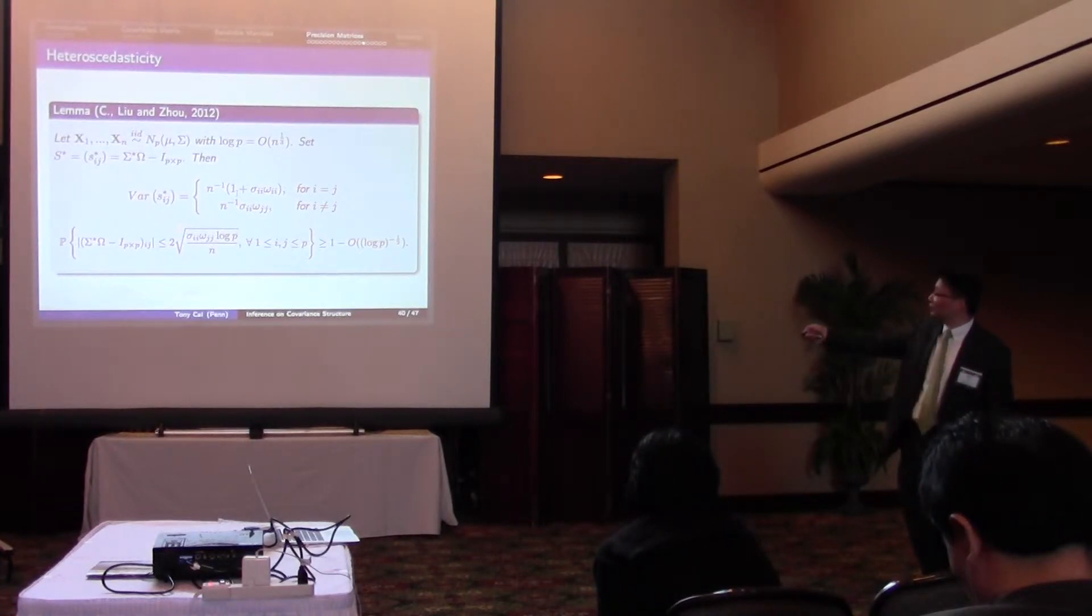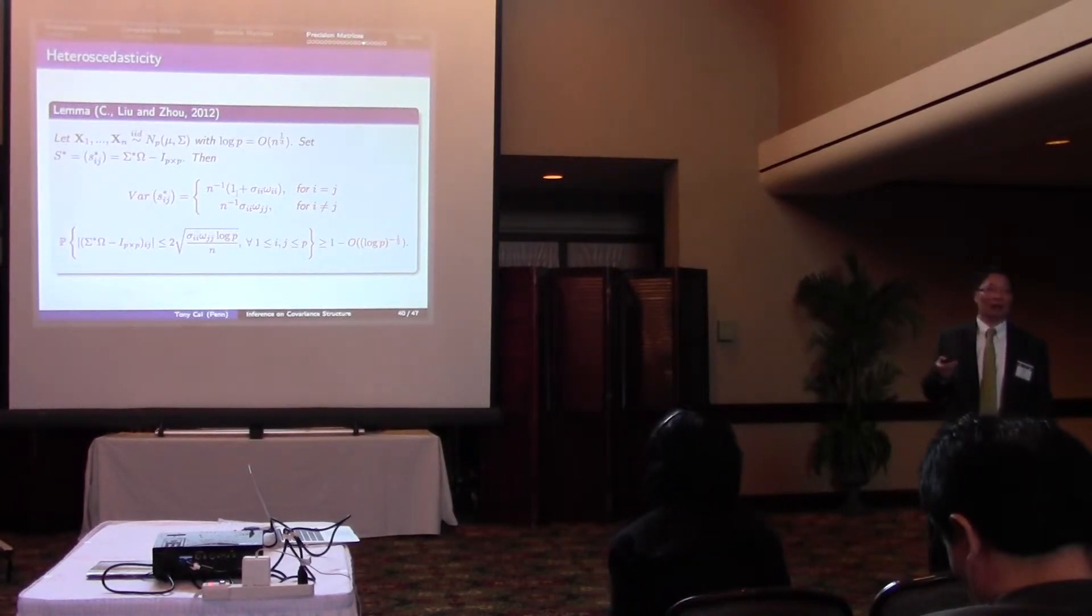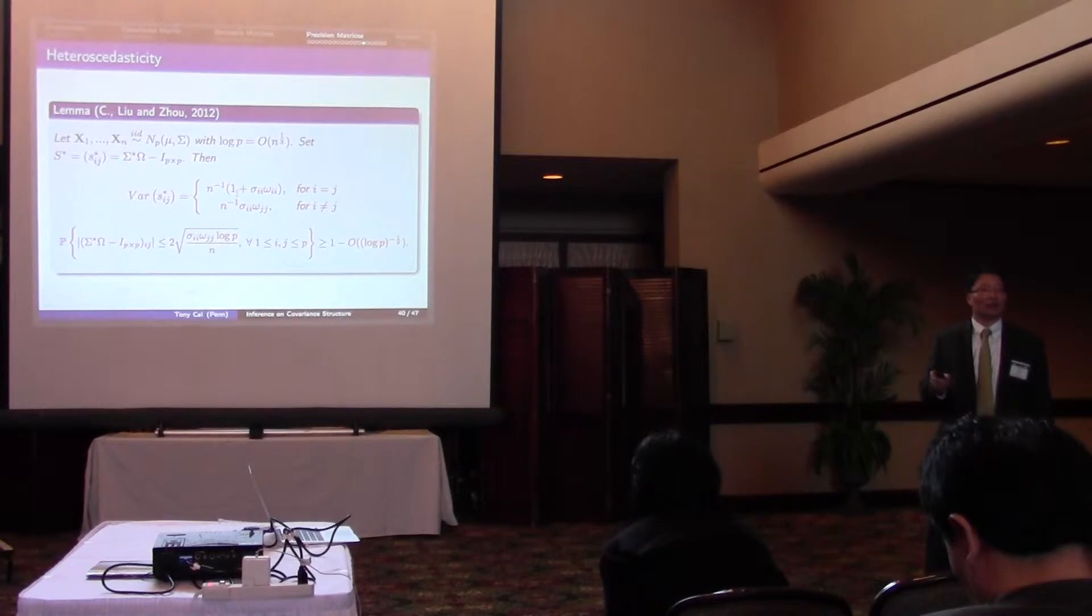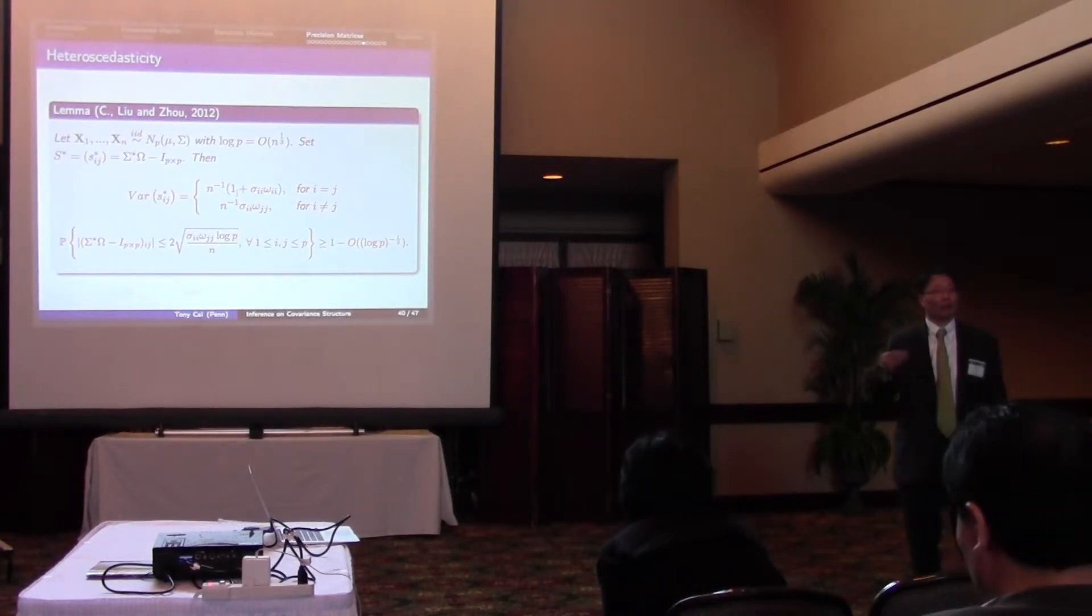So it would be nice if we have a good estimate of those two quantities. And we can estimate sigma ii by the corresponding sample version. But we do need to have an estimate of the diagonal of the precision matrix. So we are going to apply a two-step procedure.